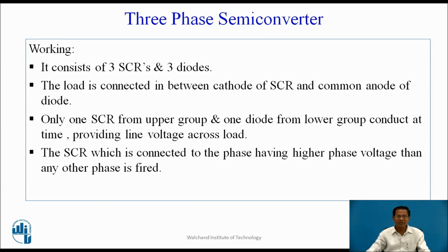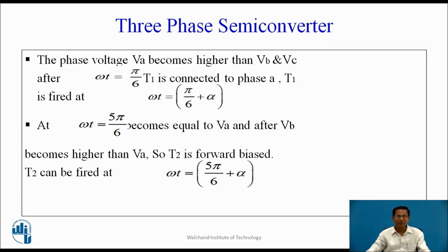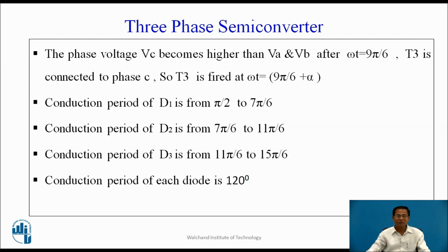The SCR connected to the phase having higher phase voltage than any other phase is fired. The phase voltage Va becomes higher than Vb and Vc after ωt equals π/6. T1 is connected to phase A, so T1 is fired at ωt = π/6 + α. At ωt = π/6 + α, Vb becomes equal to Va and then Vb becomes higher than Va, so T2 is fired at ωt = π/6 + α. The phase voltage Vc becomes higher than Va and Vb after ωt = 9π/6. T3 is connected to phase C, so T3 is fired at ωt = 9π/6 + α.